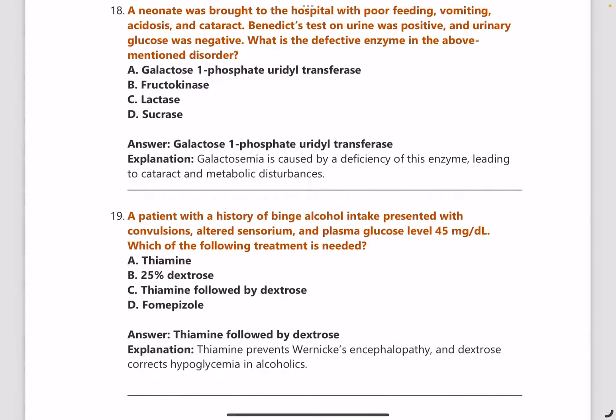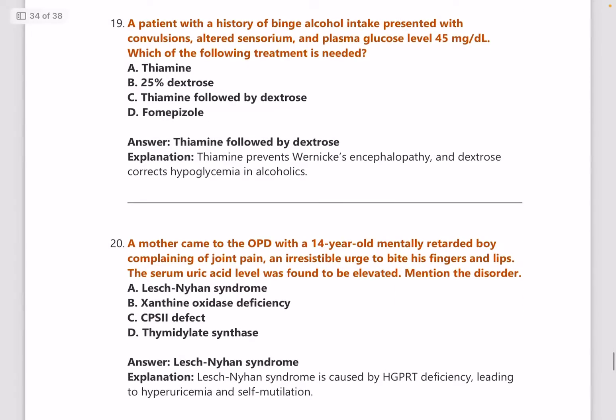Next: a neonate was brought to the hospital with poor feeding, vomiting, acidosis, and cataract. You need to have an idea about galactosemia and glucose/glycogen metabolism. The defective enzyme here is galactose-1-phosphate uridylyltransferase.